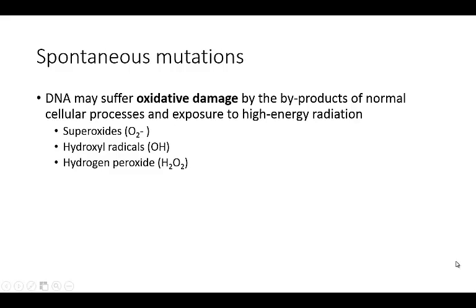DNA can also suffer oxidative damage, which can happen as a byproduct of normal cellular processes or from exposure to high-energy radiation. Things like superoxides, hydroxyl radicals, and hydrogen peroxide can all be produced as byproducts of normal cellular processes. These free radicals can go on to damage the DNA directly.